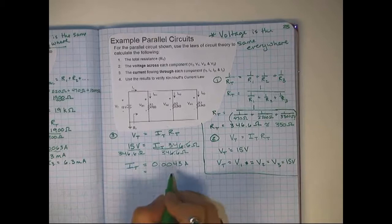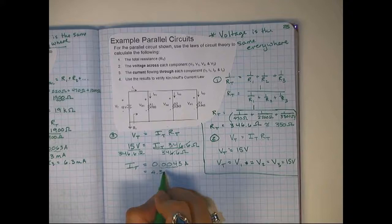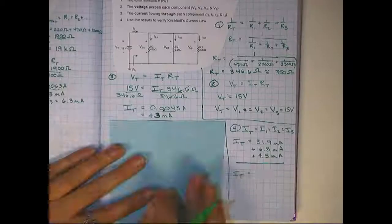0.0043 amps, or we're going to change that over to milliamps, move it over three times, so we get 4.3 milliamps.